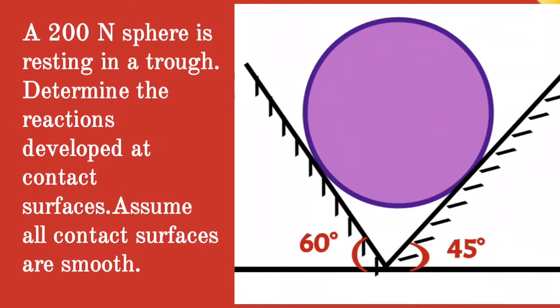Given question: a 400 N sphere is resting in a trough. Determine the reactions developed at the contact surfaces. Assume all contact surfaces are smooth.